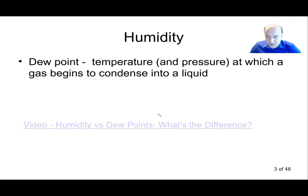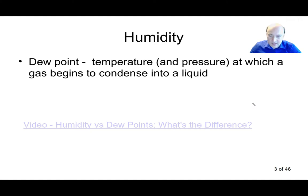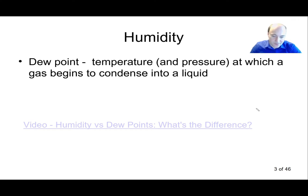We also need to define the dew point, because the very first sensor takes advantage of dew point measurements. The dew point is the temperature and pressure at which a gas begins to condense into a liquid — so it is expressed in degrees centigrade, for example 10°C or minus 5°C. There is a video linked here that explains the difference between dew point and humidity. To summarize: humidity is the water content either in kg/m³ or as relative humidity, whereas the dew point is a temperature.